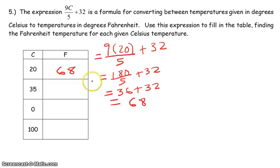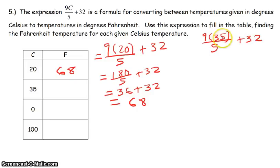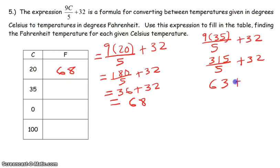In a normal problem we would include degree units, but since we're filling in the chart we just write the number. Now substituting 35 for C: 9 times 35 is 315, divided by 5 is 63, plus 32 equals 95.